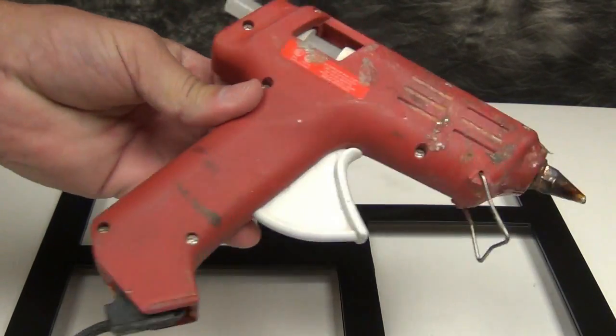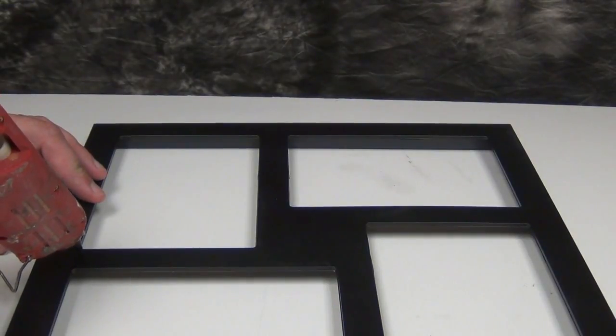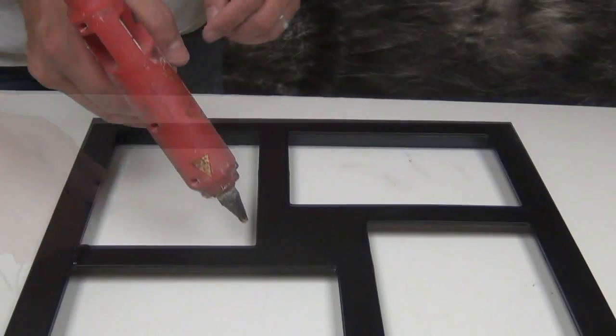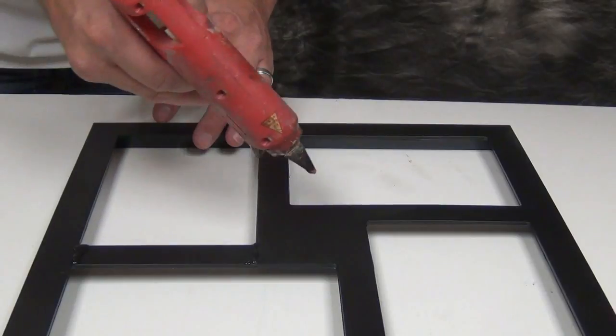One of the first tricks we're going to do to make this look like welded steel is create the welds. I almost hate to give this away—I use a hot glue gun to create welds, and you'd be surprised how convincing this is.